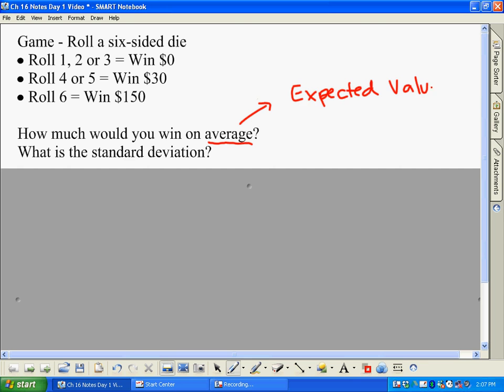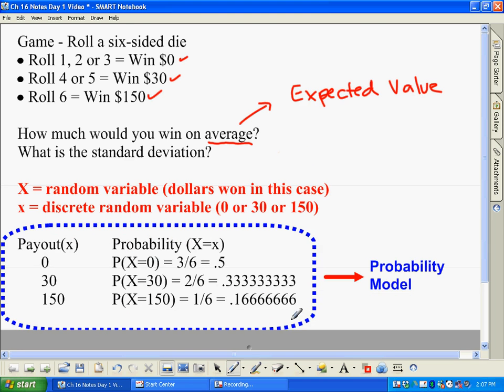So really there's two issues at play here. Number one is what you're actually going to win each time, which is either 0, 30, or 150, and then also what's the chance of each outcome happening? So I've already made a little chart down here.